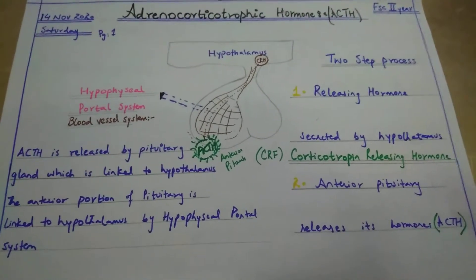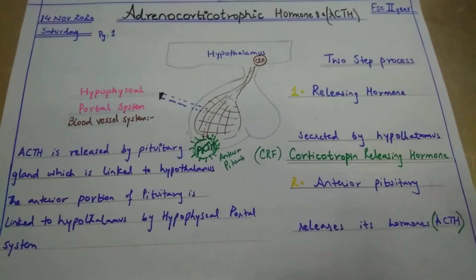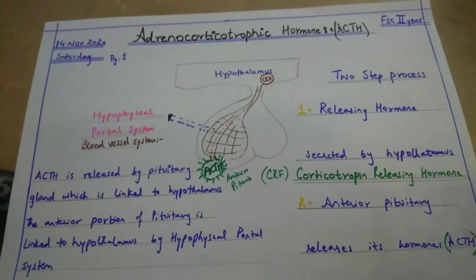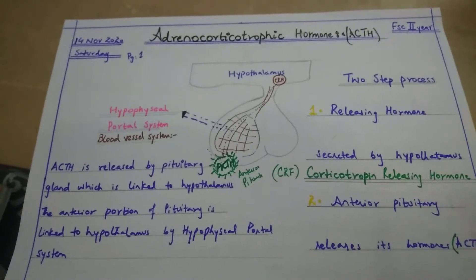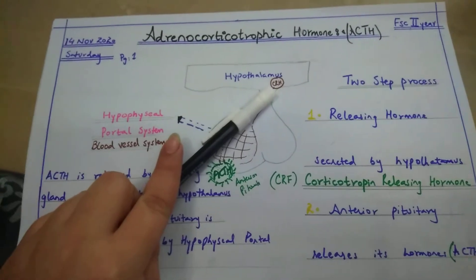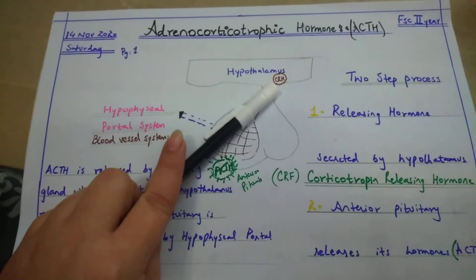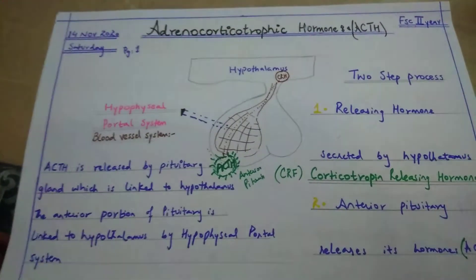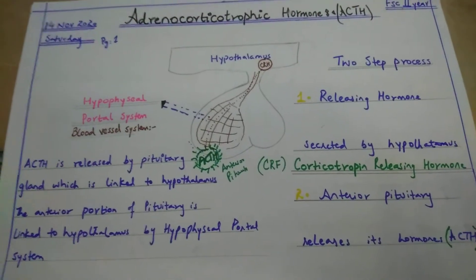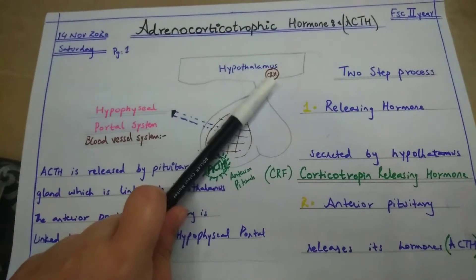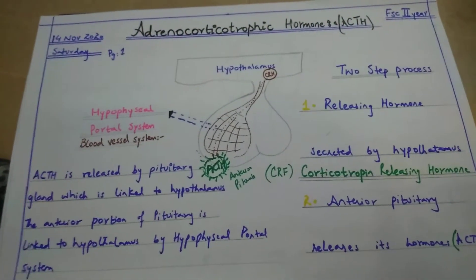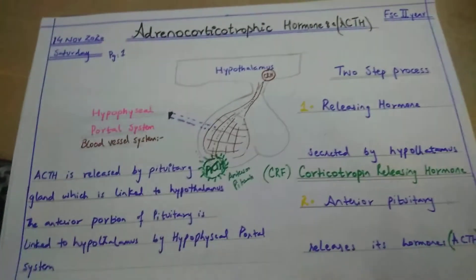The pituitary gland is the master gland, especially the anterior pituitary. In case of adrenocorticotrophic hormone, inside the hypothalamus there are neurons responsible for secreting a releasing factor called the CRH factor — corticotrophin releasing hormone. This corticotrophin releasing hormone stimulates the anterior pituitary through the hypophysial portal system, which is the blood vascular system.